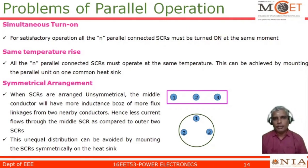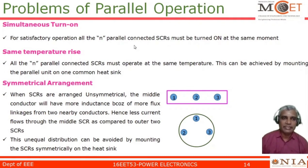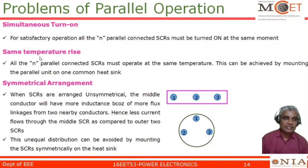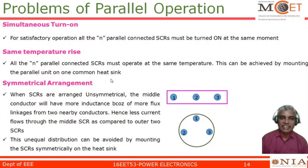Let us discuss some of the common problems which occur during the parallel operation. First, simultaneous turn-on: if n SCRs are connected in parallel, all of them must be simultaneously turned on. If there is a delay between one and another, the SCR which is later switched on will take only a minimum amount of current. Second, same temperature rise: if n SCRs are connected in parallel they should operate at the same temperature, which can be achieved by mounting the parallel units onto a common heat sink, which dissipates heat from the device to the atmosphere.